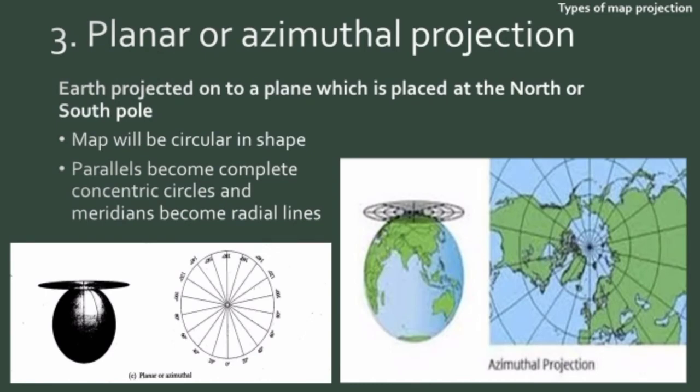The last type is planar or azimuthal projection, projected onto a plane placed at the North or South Pole. The map will be circular in shape. Parallels become complete concentric circles and meridians become radial lines. Equatorial areas cannot be shown in this projection; it is more prominent for polar areas.